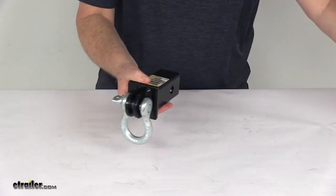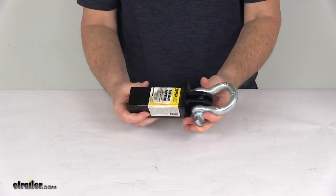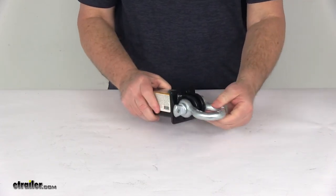But that should do it for the review on the MaxTow tow strap loop for 2-inch trailer hitches with the 10,000 pound weight capacity.